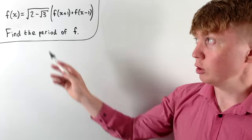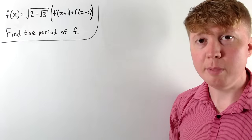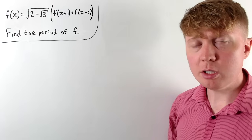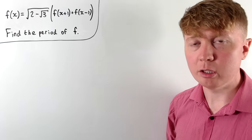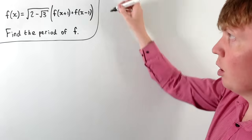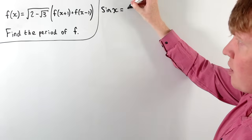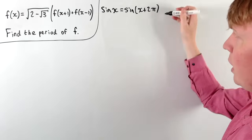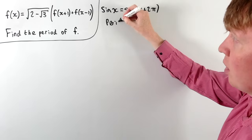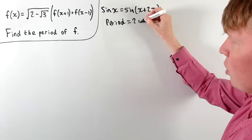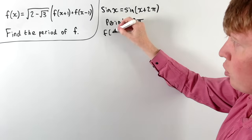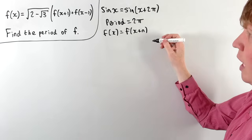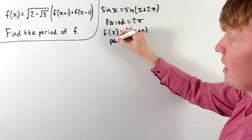We're going to solve this problem where we're given a functional equation and we need to find the period of the function f which satisfies it. If you think about a periodic function, for example sine, the sine function is periodic because sine x is always equal to sine of x plus 2π. So the period would be equal to 2π for the sine function. More generally, if we've got a function where f(x) is equal to f(x+n) for all values of x, then the period is n.